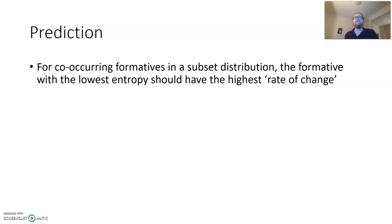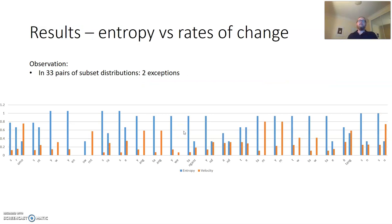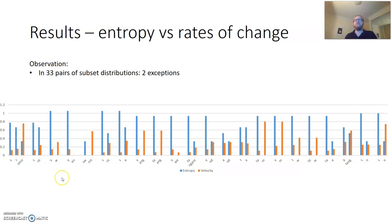Now for the results. Our prediction is that formatives in morphologically redundant situations should show that those with the lowest entropy — highest communicative precision — also have the highest rate of change. For 33 pairs of subset distributions, there are only two exceptions in the data. The pattern is clear: for each formative, as entropy decreases — that is, as the information they provide increases — the velocity, the rate of change, also increases. This seems to provide strong confirmation of our prediction.